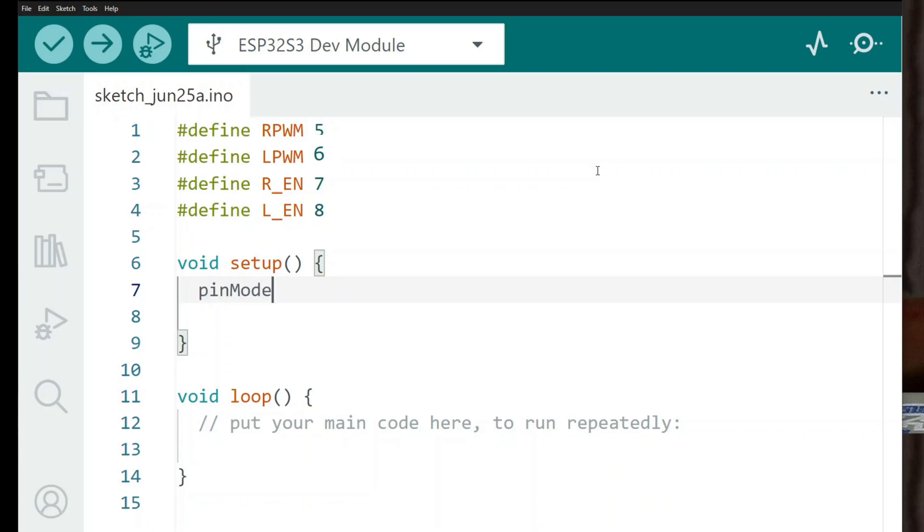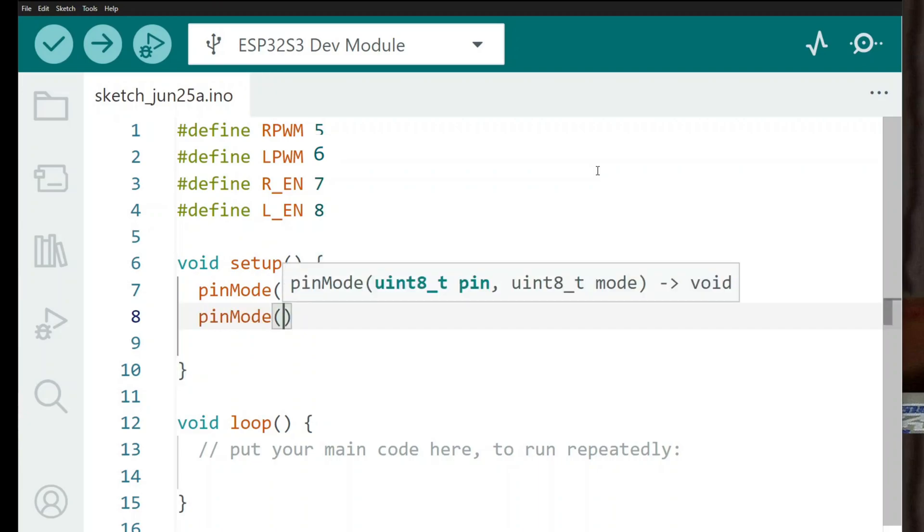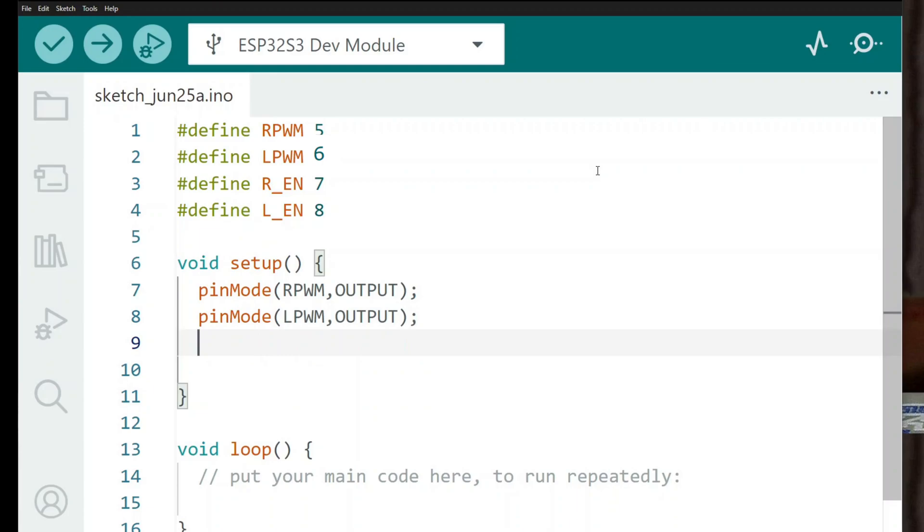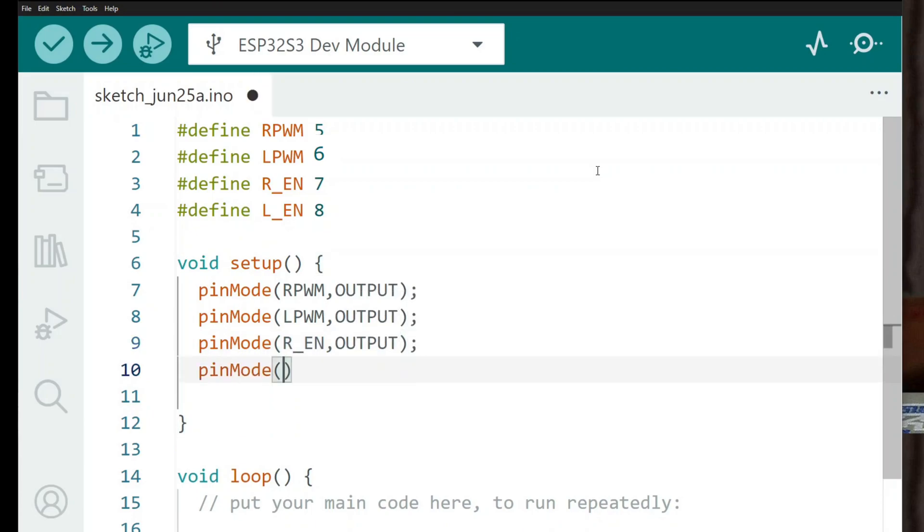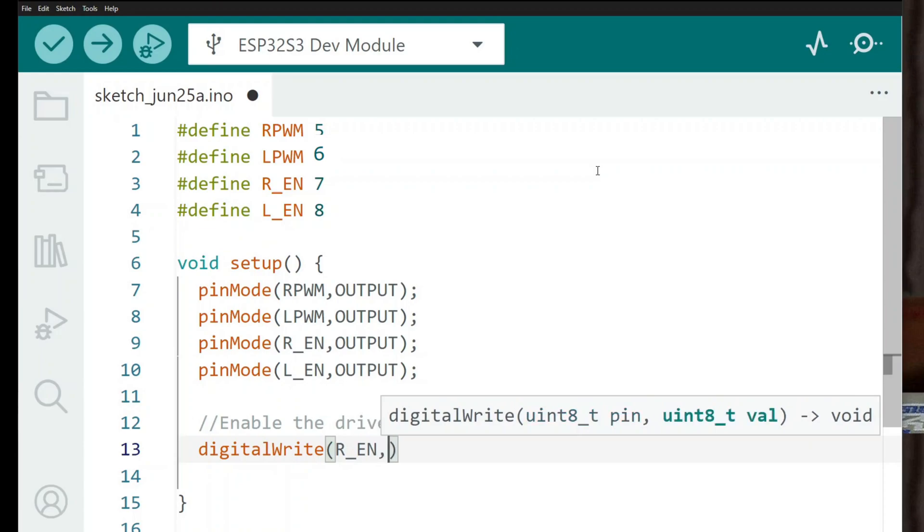Then, inside the Setup function, I set all those pins as outputs using pinMode. This step tells the Arduino that we'll be sending signals out through these pins. I also set both Enable pins, REN and LEN, to High, which activates the motor driver and allows it to respond to our PWM inputs.